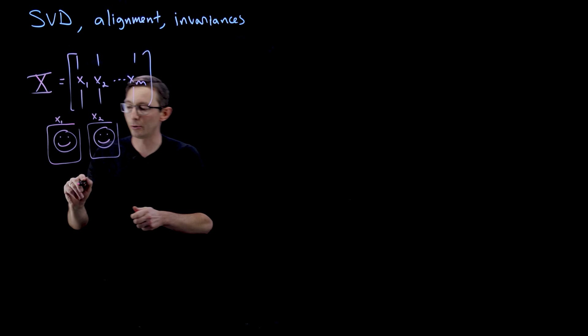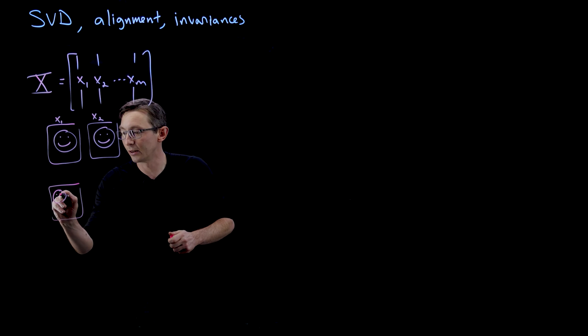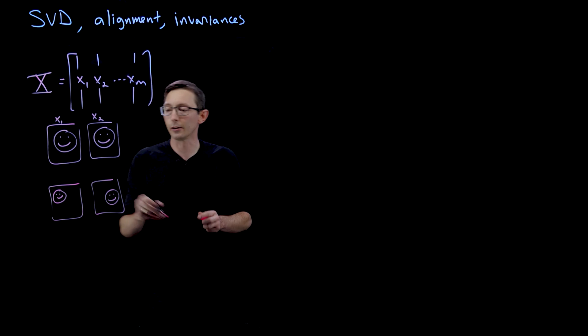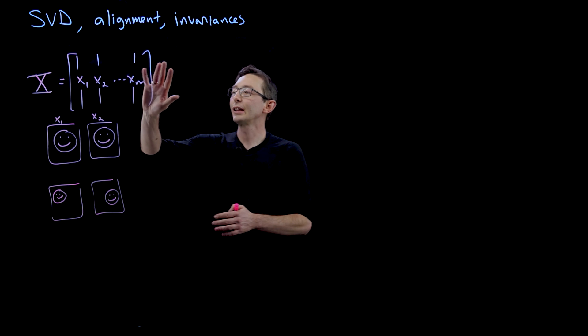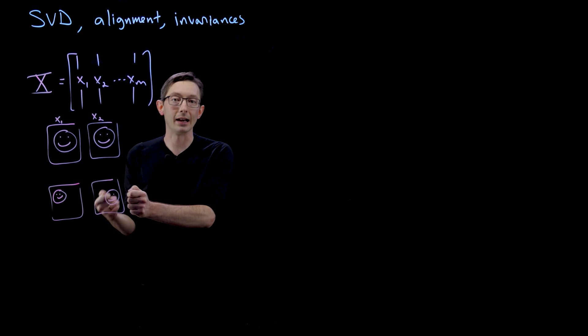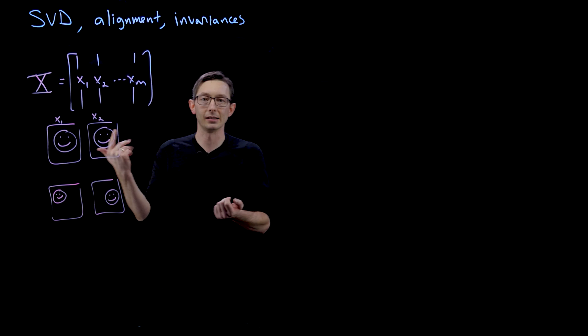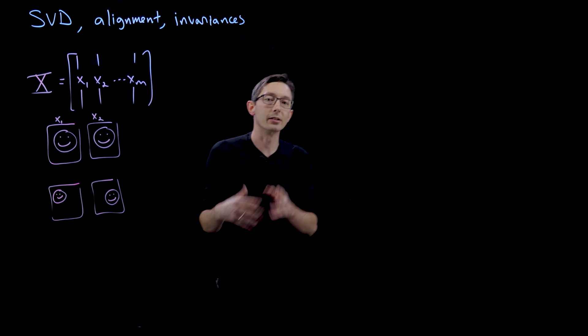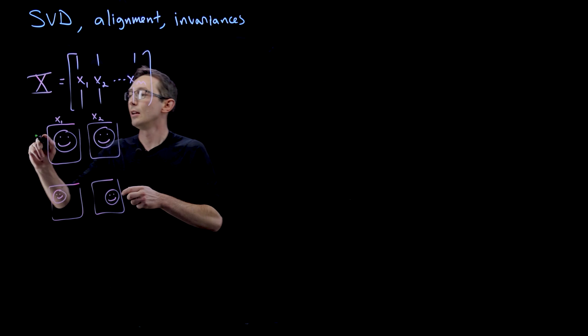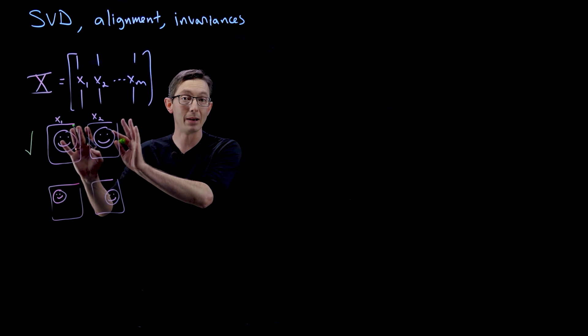If I have an example where my data is not aligned, so I have a person over here and a person over here so that they're kind of translated, I'm going to get a terrible singular value decomposition because now I'm not comparing eyes with eyes and noses with noses and mouths with mouths. I'm comparing eyes with space, and cheek with eye and things like that. So it doesn't make any sense if the data is not aligned. So we assume that our data is aligned and cropped so that it's kind of an apples to apples comparison.